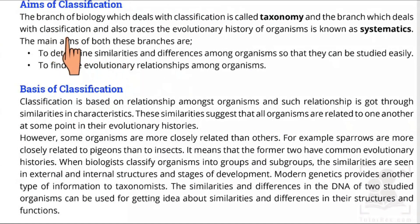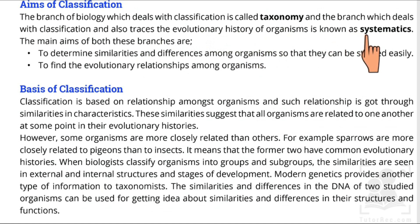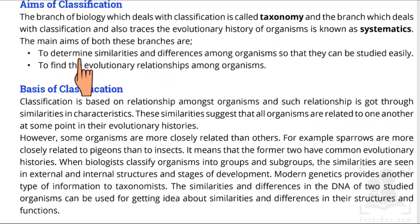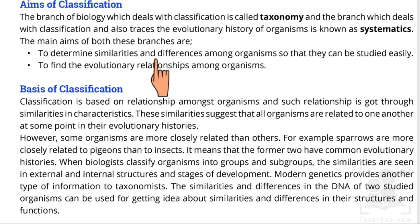The branch of biology which deals with classification is known as taxonomy. The branch which deals with classification and also comprises the evolutionary history of organisms is known as systematics. The main aim of both these branches is to determine the similarities and differences among organisms so that they can be studied easily.